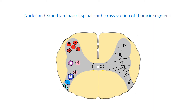The gray matter surrounding the central canal, lamina 10, is termed gray commissure. Here axons decussate from one side of the spinal cord to another. Anterolateral (nucleus 7), anteromedial (nucleus 8), central (nucleus 9), posterolateral (nucleus 10), posteromedial (nucleus 11), and corresponding laminae 8 to 9 are located in the ventral horn and innervate skeletal muscles.